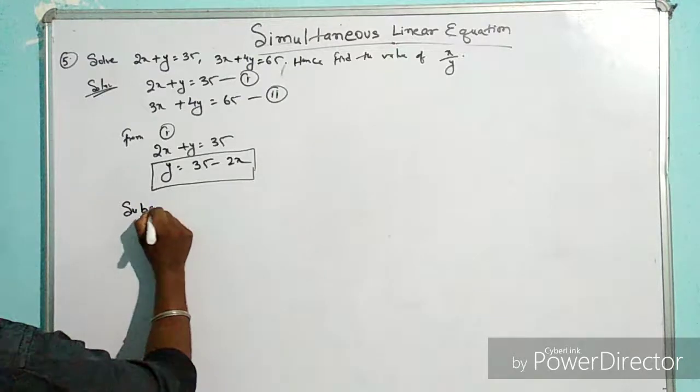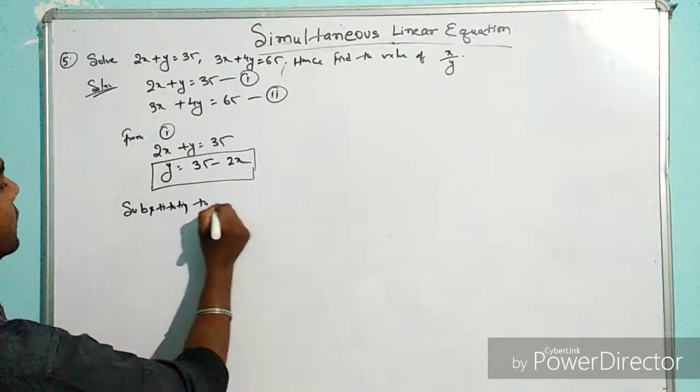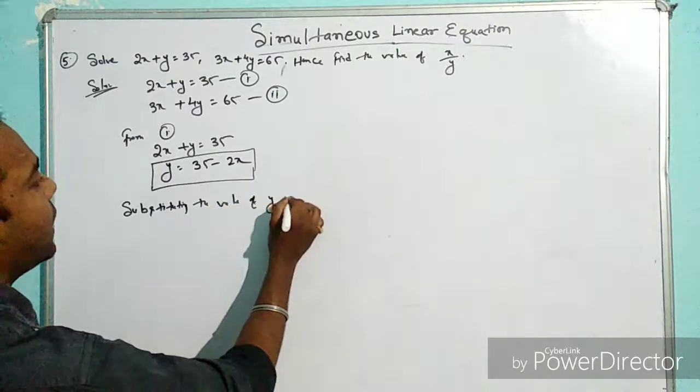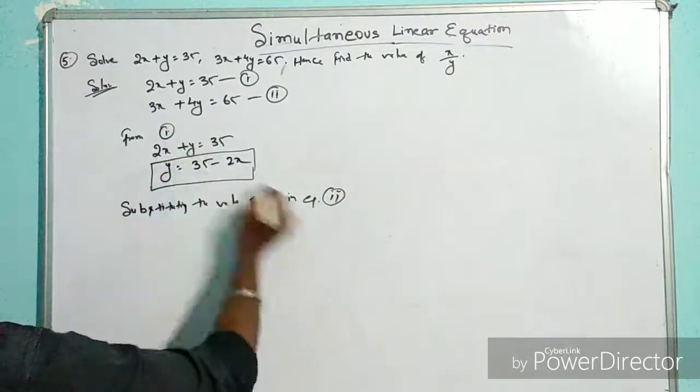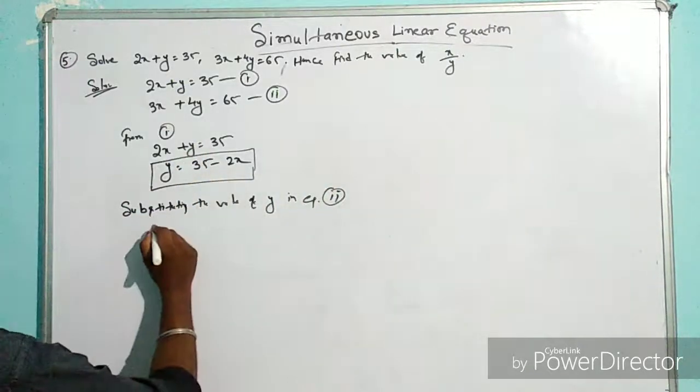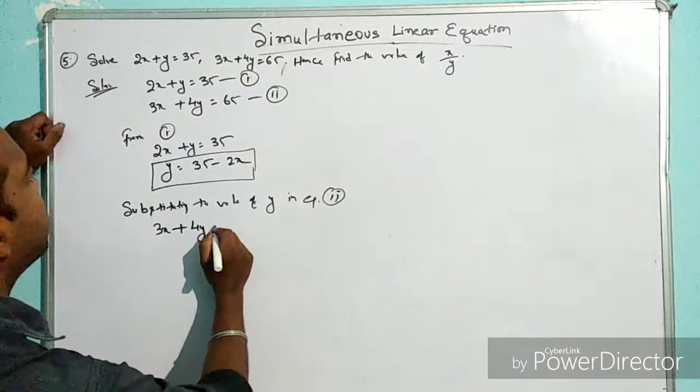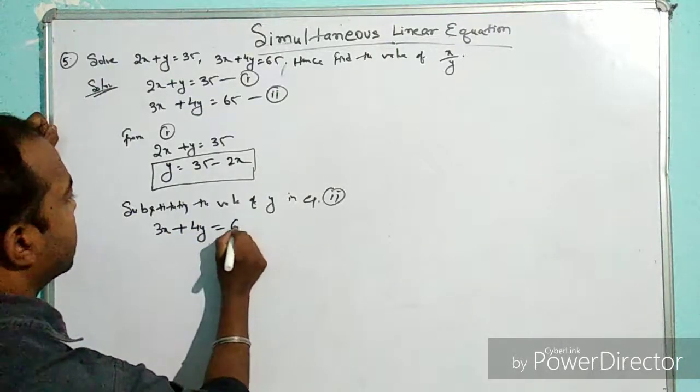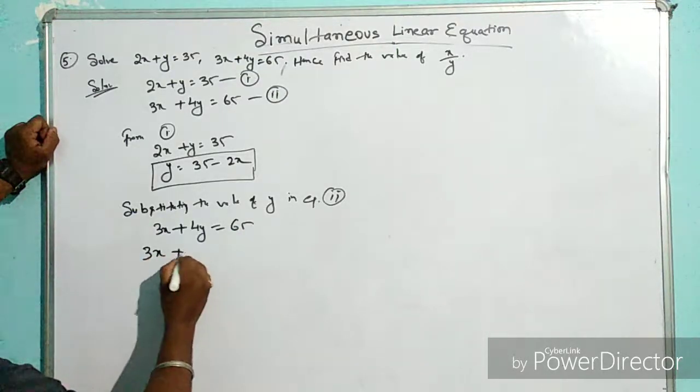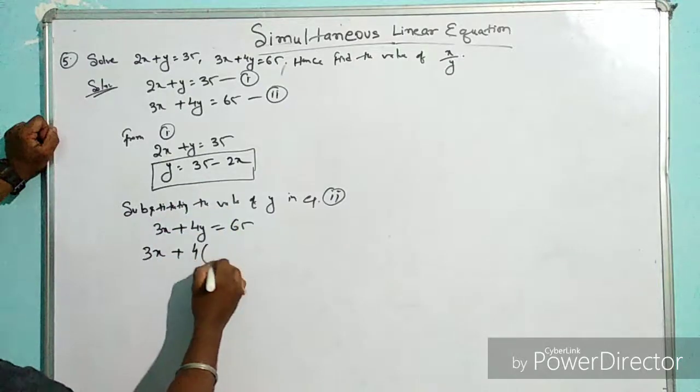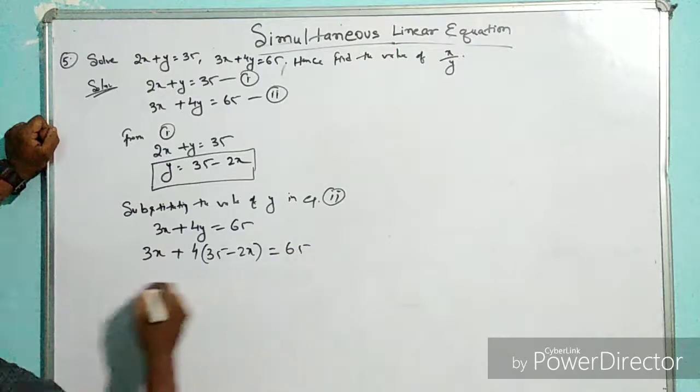Substituting this value of y in equation 2, we have 3x + 4y = 65. So 3x + 4(35 - 2x) = 65.